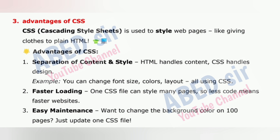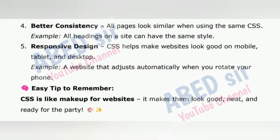3. Easy maintenance: want to change the background color on 100 pages? Just update one CSS file. 4. Better consistency: all pages look similar when using the same CSS. Example: all headings on a site can have the same style. 5. Responsive design: CSS helps make websites look good on mobile, tablet, and desktop. Example: a website that adjusts automatically when you rotate your phone. Easy tip: CSS is like makeup for websites — it makes them look good, neat, and ready for the party.